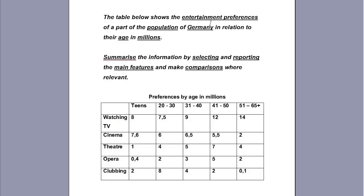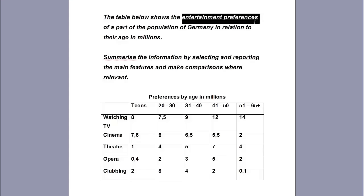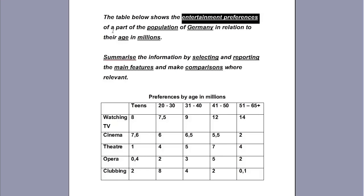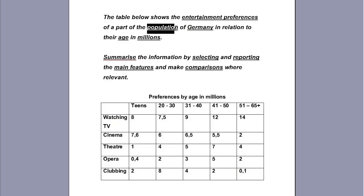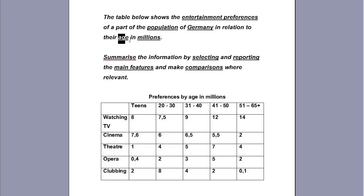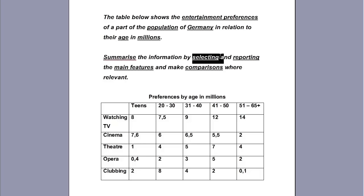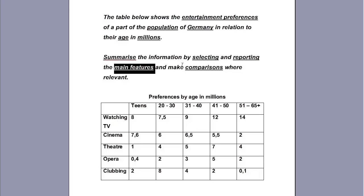We underline of course entertainment preferences of the population of Germany — of a part of the population, better — their age, in millions, and of course the most important things we are asked to do: to summarize, to select and report the main features, and then make comparisons.